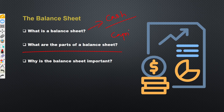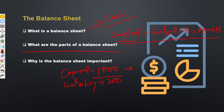The cash flow statement has three sections: investing activities — buying and selling securities; operating activities — expenses paid and income received; and financing or capital activities — capital calls and distributions. Each section shows the change in cash position, helping fund managers understand net cash availability and take investment or capital call decisions.